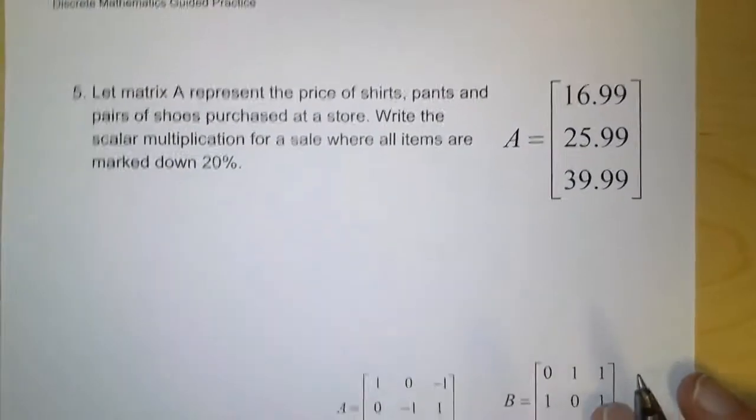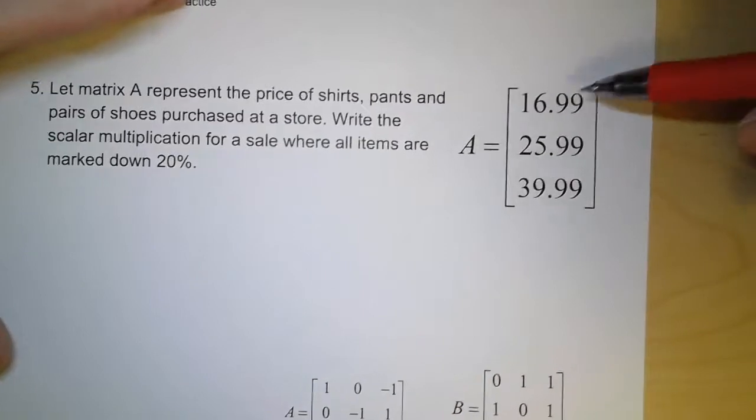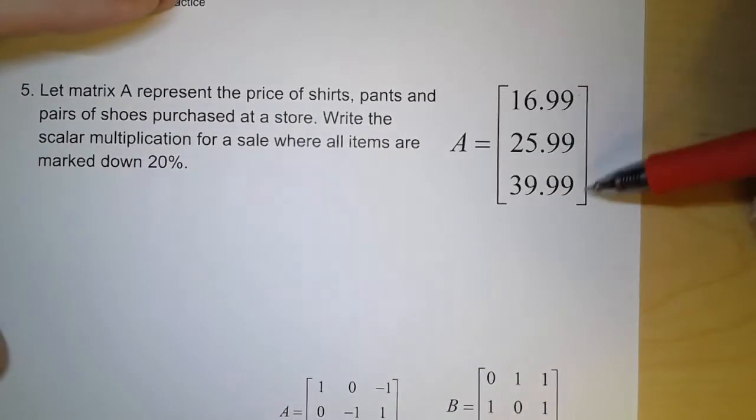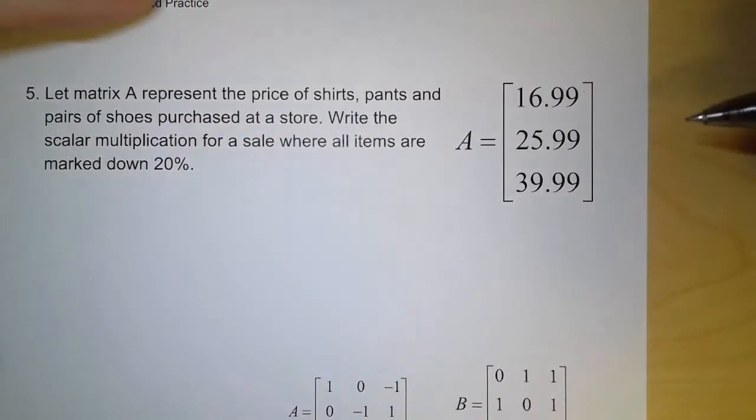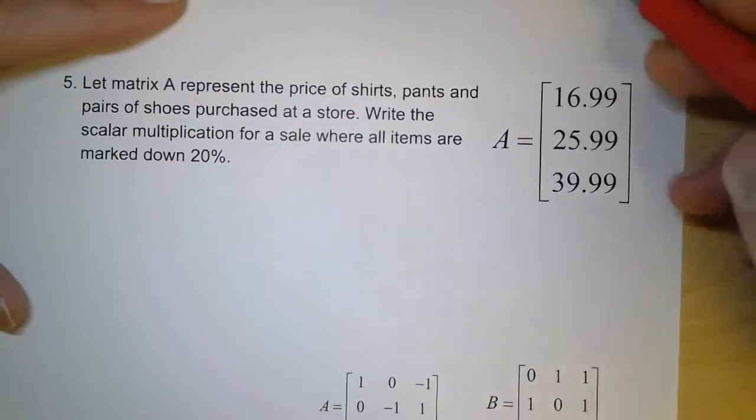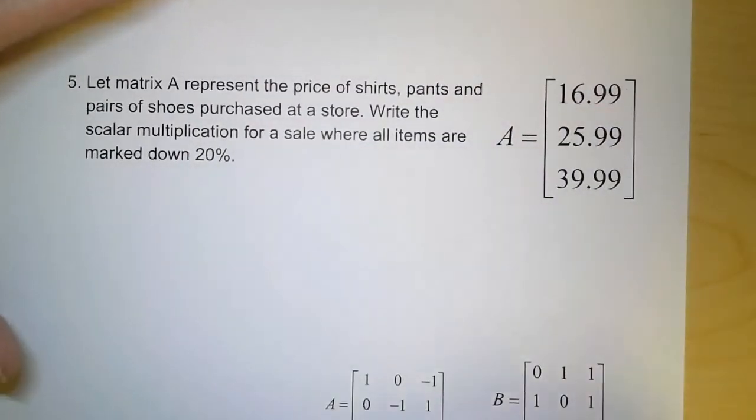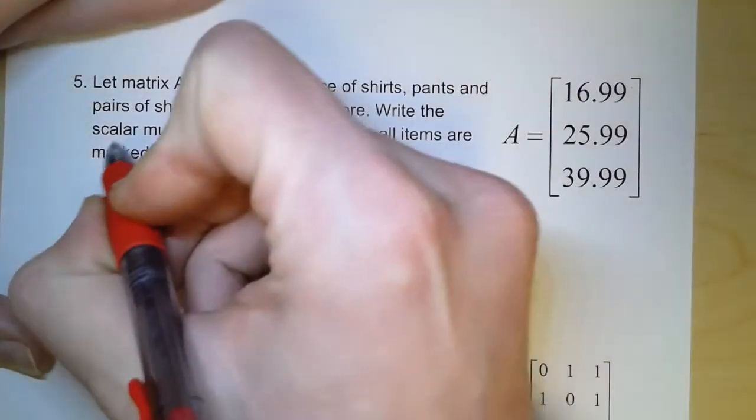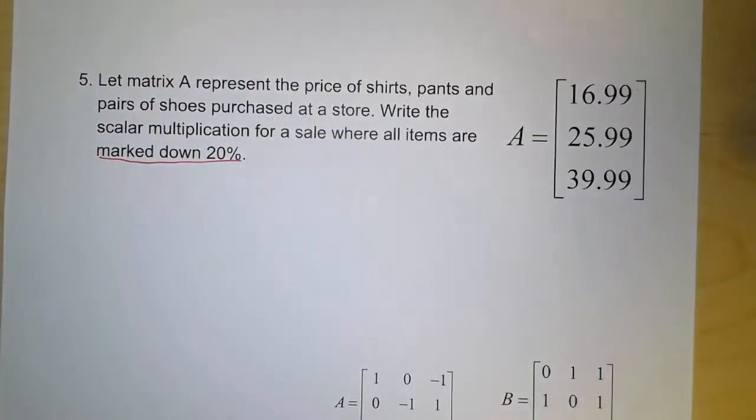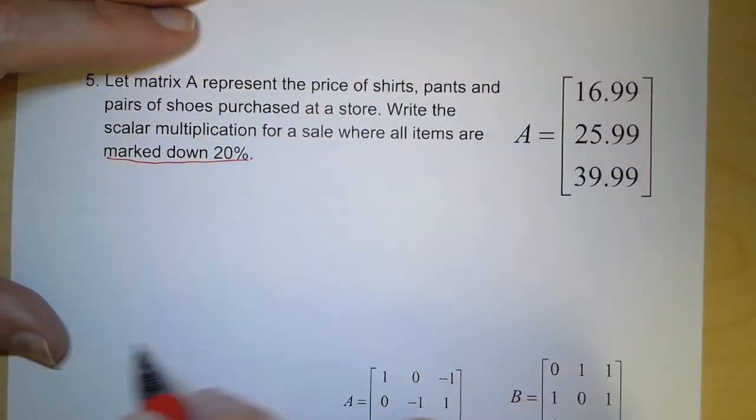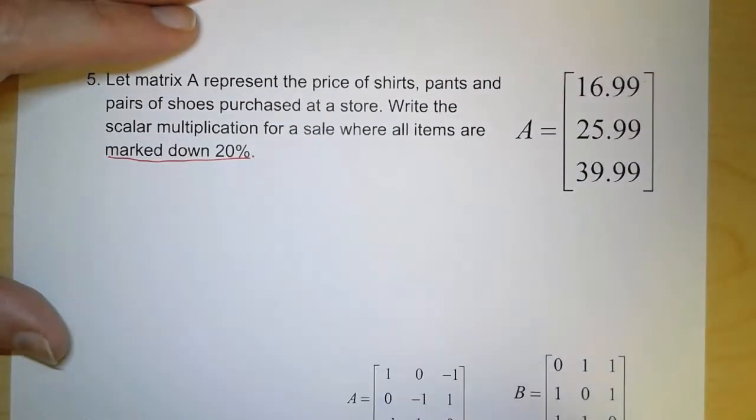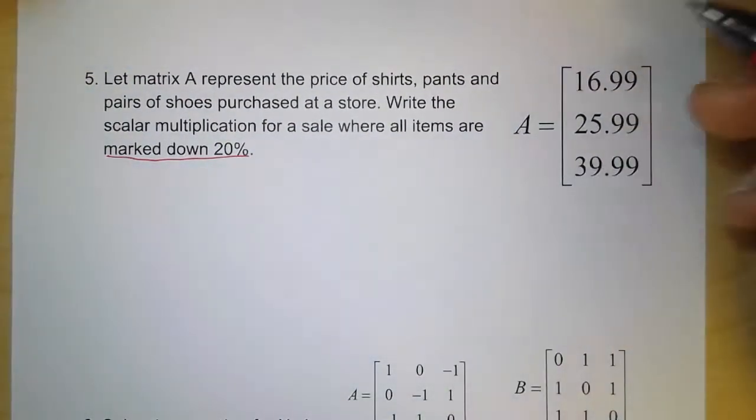Now, for the next problem, this matrix represents the price of shirts, pants, and shoes purchased at the store. Now, we want to write the scalar multiplication for a sale where all items are marked down 20%. Now, when we mark it down 20%, that means 20% we don't now have to pay. But that means the price retains 80% of its value. A lot of people get a little messed up when it comes to percent change.